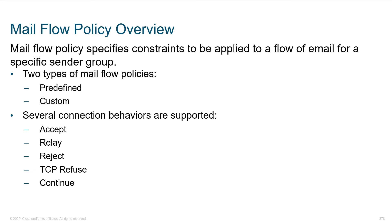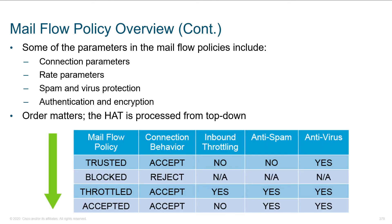There are predefined mail flows that exist for you. Cisco tries to make it easy to get this up and running in the most logical way, and once it's running we can tweak and tune it. When we identify traffic coming from somebody we know is a bad guy, we can accept, relay, reject, do a TCP refuse, or just continue processing. The mail flow policy overview includes additional parameters: connection limits — how many connections simultaneously will you accept — rate limits, how many emails they can send, how big, how many recipients in a single email, how many people can be carbon copied. These thresholds can vary based on sending group.